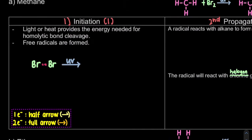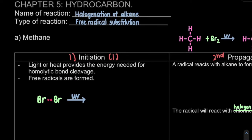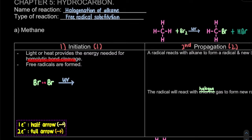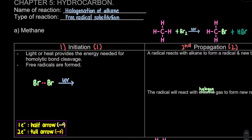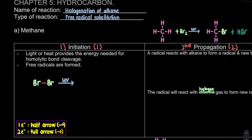The first step is initiation, where the light or heat provides the energy. Our UV or hν will provide the energy needed for homolytic bond cleavage. For homolytic bond cleavage, one bond has two electrons, and homolytic means the two electrons will be shed equally. So when they are shed equally, we will form two radicals.